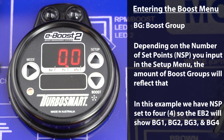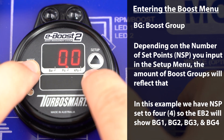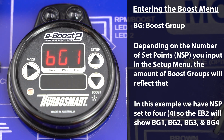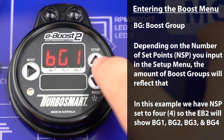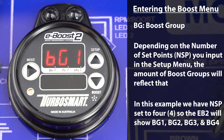Starting from the default live boost display, enter the boost menu by pressing the mode and the down arrow button simultaneously. If done correctly you should see BG1 on the screen. BG stands for boost groups. In this example we set the number of set points to 4, so you can press the up and down buttons to go to BG2, BG3, and BG4. We only need to be in BG1 for this video so we will select that group.